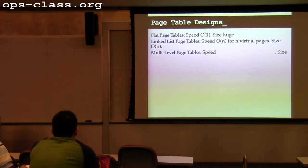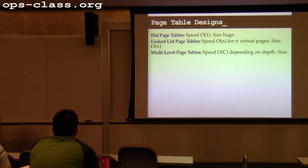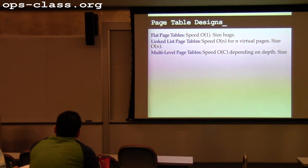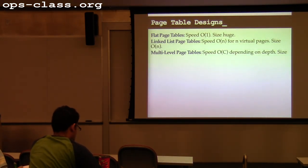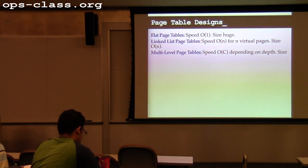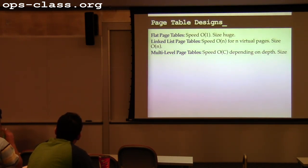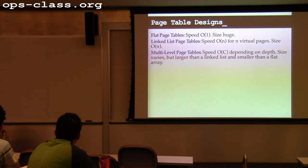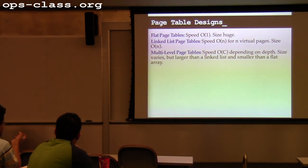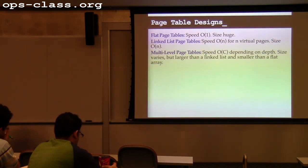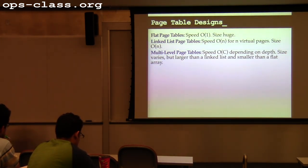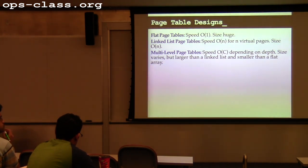Multi-level page tables are a tree-like structure where I split the virtual page number and use different parts as indexes into different levels of the table. Speed is O(constant) — a constant number of traversals depending on depth, fixed for a given number of levels. Size is much smaller than a flat array: I only have second-level tables for parts of the address space that are in use. This is a nice fit because address spaces are sparse.